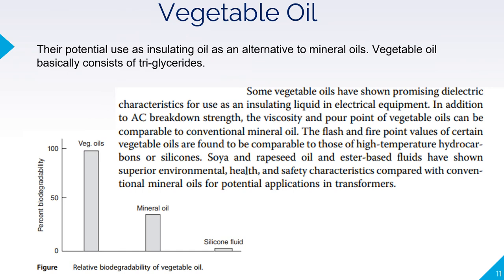The next example of liquid insulating material is vegetable oil, used as an alternative to mineral oils. Vegetable oil basically consists of triglycerides. Some vegetable oils have shown promising dielectric characteristics, with AC breakdown strength, viscosity, and pour point comparable to conventional mineral oil. Flash and fire point values of certain vegetable oils are comparable to high-temperature hydrocarbon and silicone fluids. Soya, rapeseed oil, and ester-based fluids have shown superior environmental, health, and safety characteristics compared to mineral oil. Biodegradability of vegetable oil is greater than mineral oil and silicone fluid.